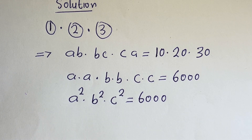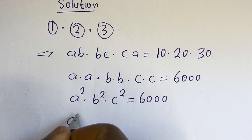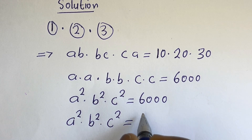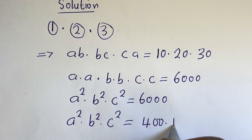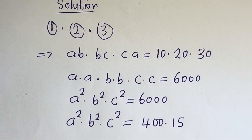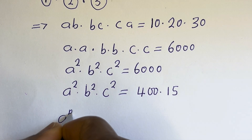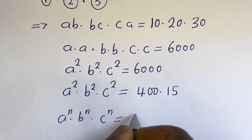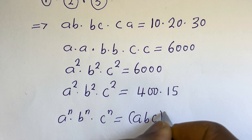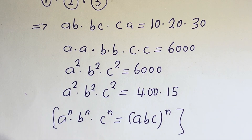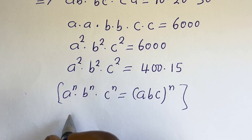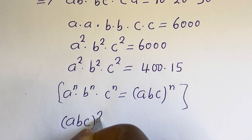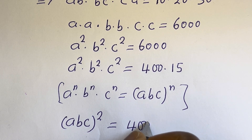Now, take note that if you have a to the power of n multiplied by b to the power of n multiplied by c to the power of n, then this equals (abc) to the power of n. So this can be written as (abc)² is equal to 400 multiplied by 15.